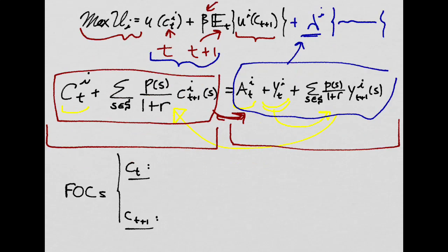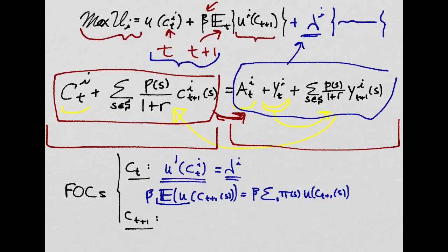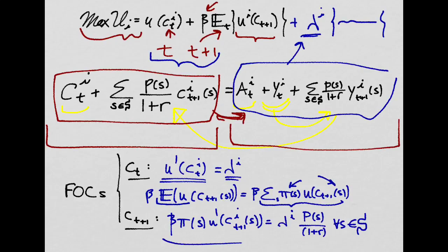So taking derivatives, we get that the marginal utility of consuming has to be equal to the shadow price of income for this agent I. And since the future expected value of the utility of the consumer is equal to the weighted sum given the probabilities of each state for its consumption, we will get this expression right here when we take the derivative with respect to Ct plus 1. And this holds for all possible states of the world.